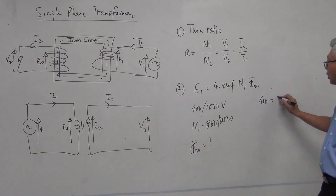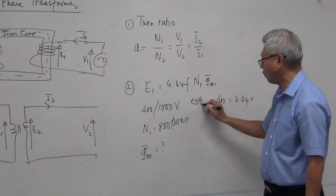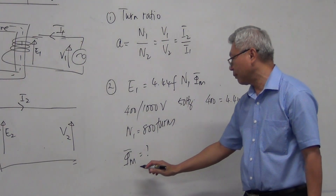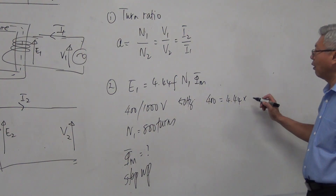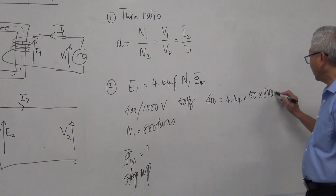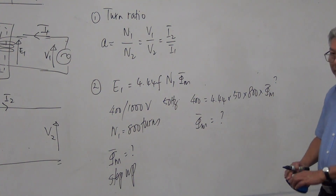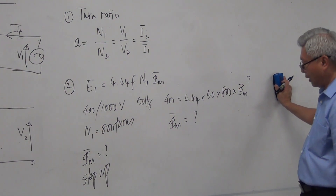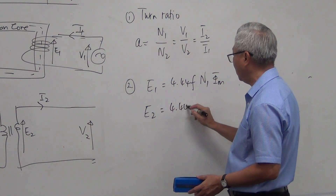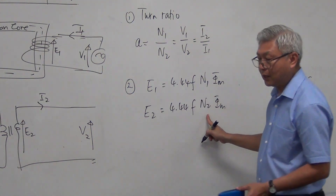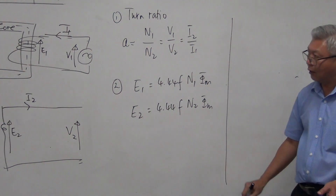Using the formula: 400 equals 4.44 times 50 times 400 times Φmax, and the maximum flux can therefore be found. Likewise, you can also apply this formula on the secondary side: E2 equals 4.44 times F times N2 times Φmax. If you use the primary voltage, use the primary turns; if you use the secondary voltage, use the secondary turns. That is the basic formula of a single-phase transformer.